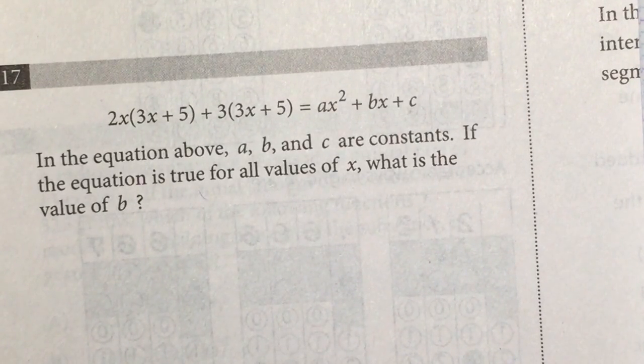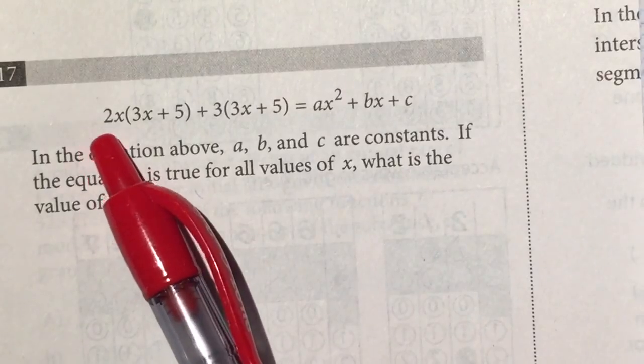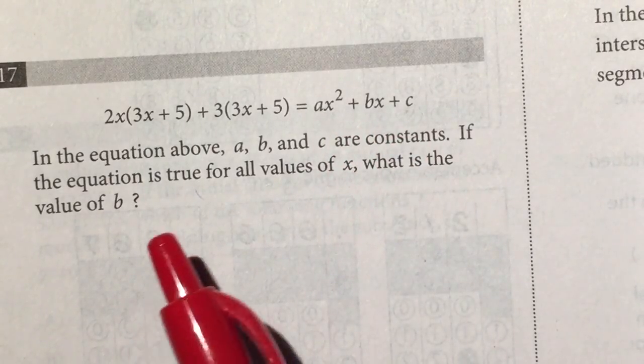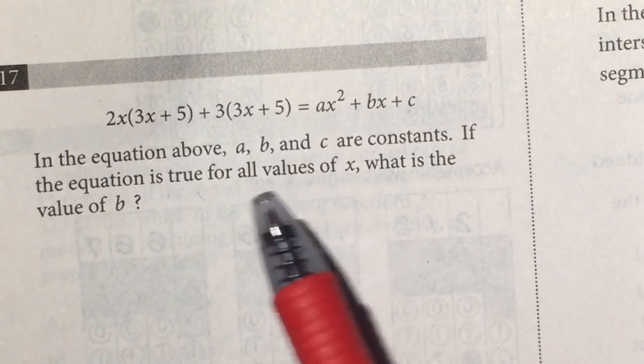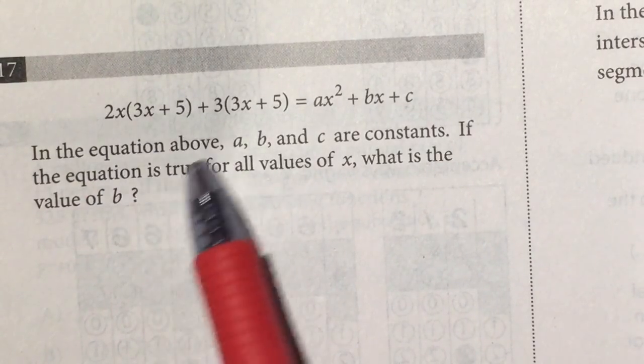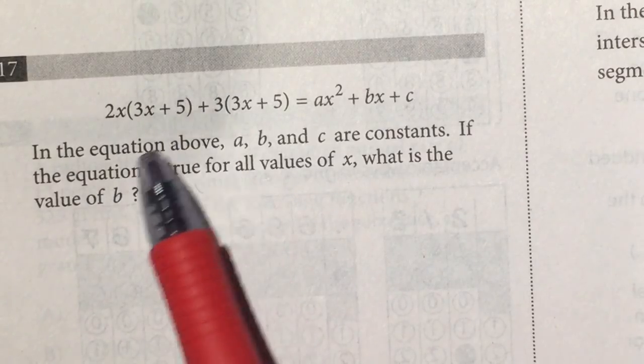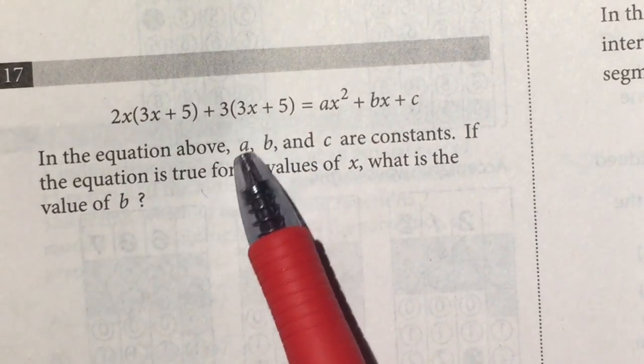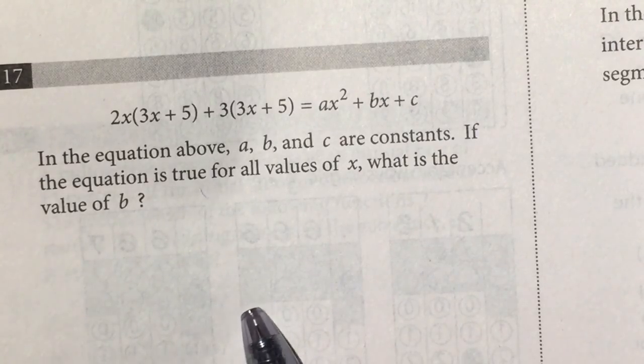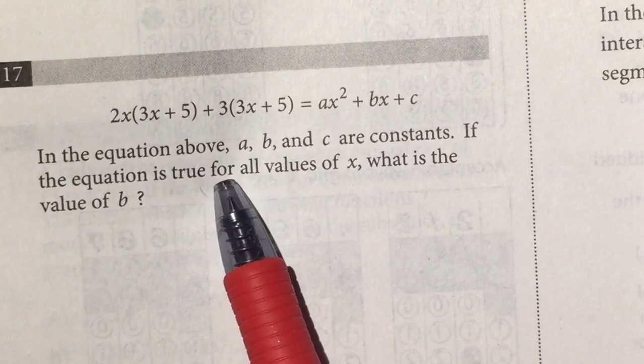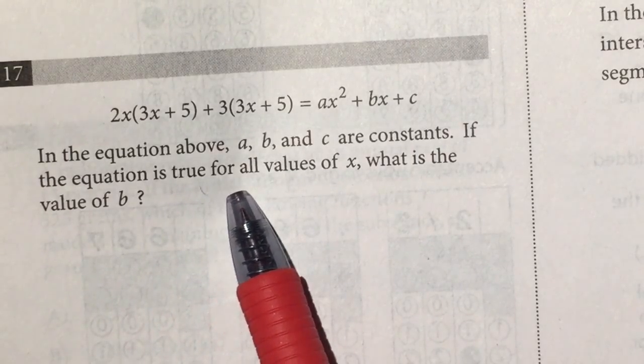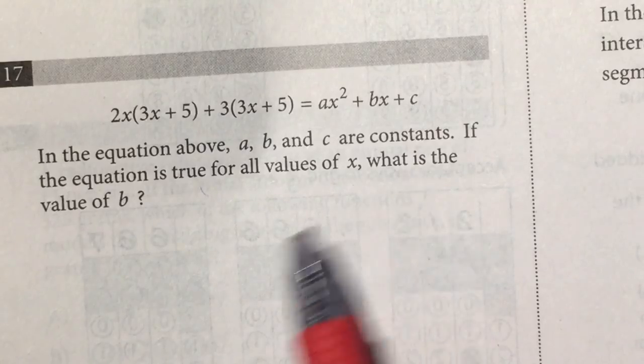Okay, hello dear friends, take a look at another problem. Let me just read this although this is not my native language. I will try my best. 2x times parenthesis 3x plus 5 end parenthesis plus 3 times parenthesis 3x plus 5 end parenthesis equals ax squared plus bx plus c. In the equation above, a, b, and c are constants. If the equation is true for all values of x, what is the value of b?